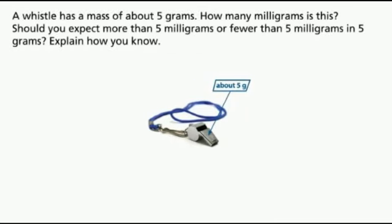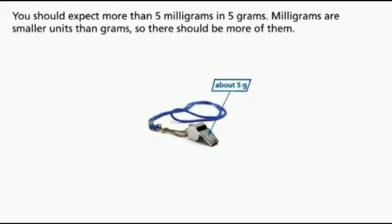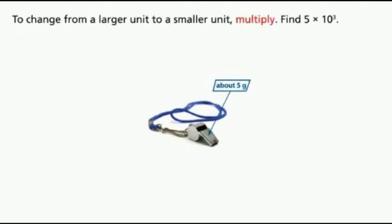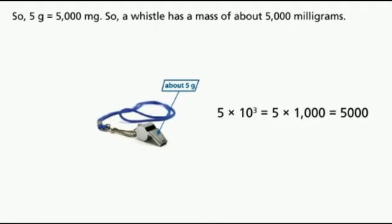A whistle has a mass of about 5 grams. How many milligrams is this? Should you expect more than 5 milligrams or fewer than 5 milligrams in 5 grams? You should expect more than 5 milligrams, because milligrams are smaller units than grams. To change from a larger unit to a smaller unit, multiply. 5 times 10³ equals 5,000 milligrams. So a whistle has a mass of about 5,000 milligrams.